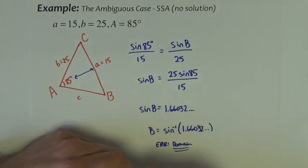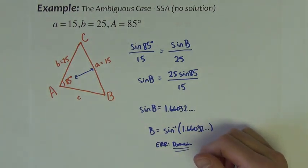Recall that the domain of an arcsine function is negative 1 to 1. We're asking the calculator to find arcsine of 1.66, and it's just not possible.